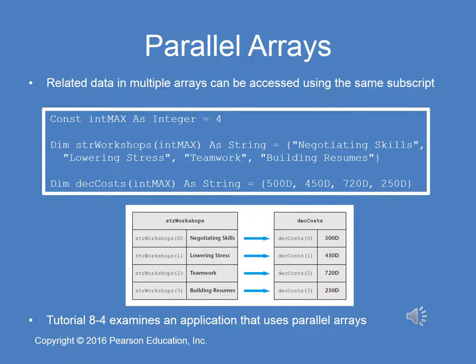Next, we talk about parallel arrays, which are arrays with the same size that have related data. The most common example is an array that includes the 12 month names as strings, and then a second parallel array that includes 12 integers corresponding to the maximum number of days in that particular month: 31 for January, 28 for February, et cetera. That example is used in Tutorial 8-4.